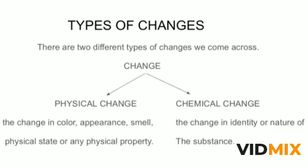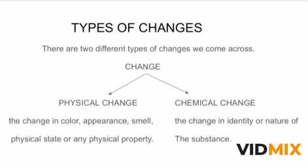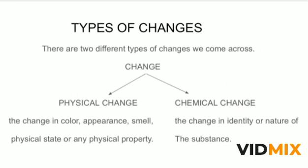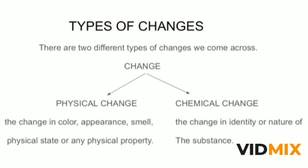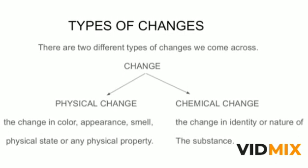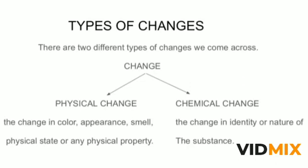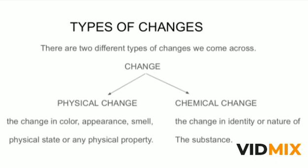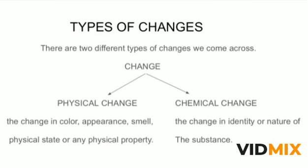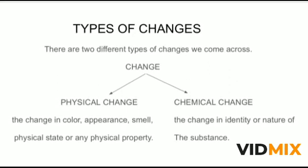So in physical change, only the look of the substance changes — its color, or any other physical property like its state — these can change. But in chemical change, the substance itself changes; it doesn't remain the same. Its identity — what we call its composition — changes. Bonds break, bonds are made, and another substance is formed, so its identity is completely changed. But in physical change, the substance remains as it was — only the outer appearance changes, not the substance itself.